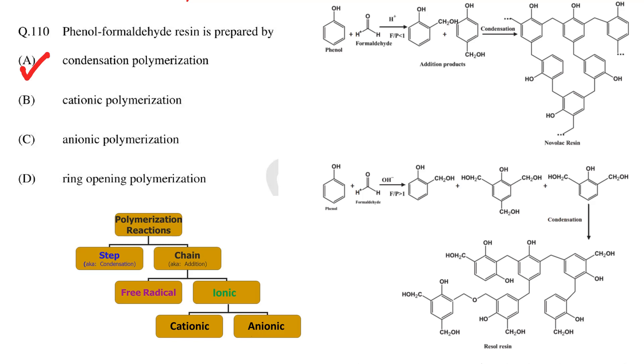Option B and C are incorrect because vinyl monomers are polymerized using addition polymerization that can be either radical or ionic polymerization. And option D is also incorrect because only cyclic monomers with strained ring undergo ring opening polymerization. Benzene rings are highly stable and do not undergo ring opening.